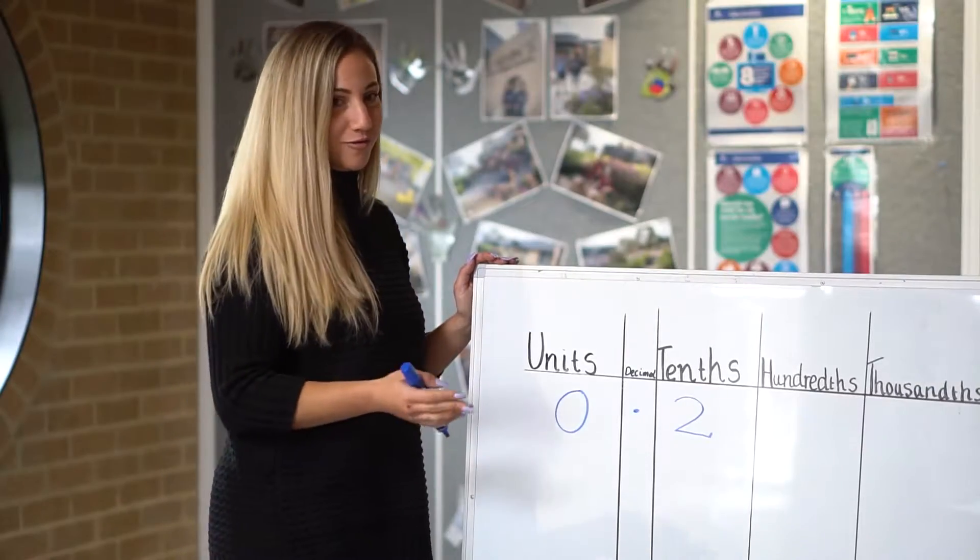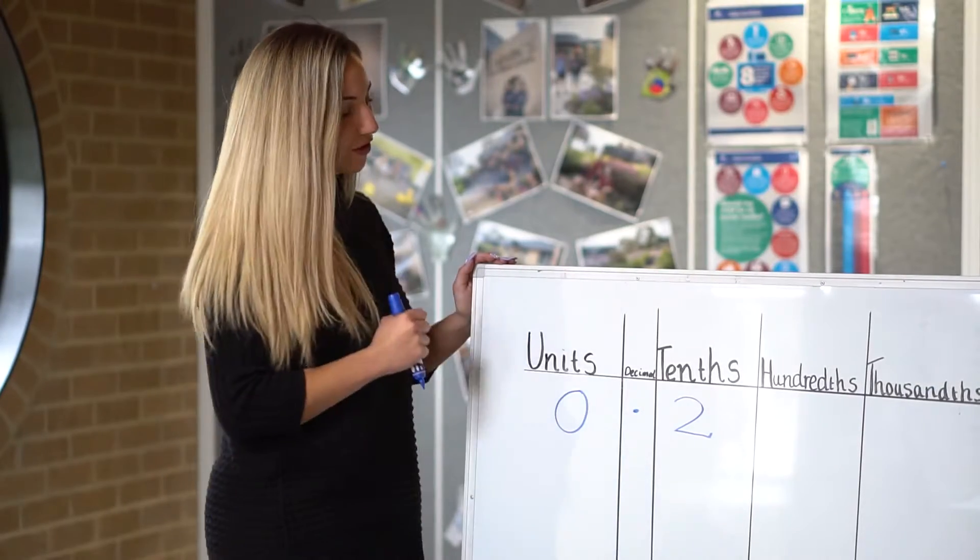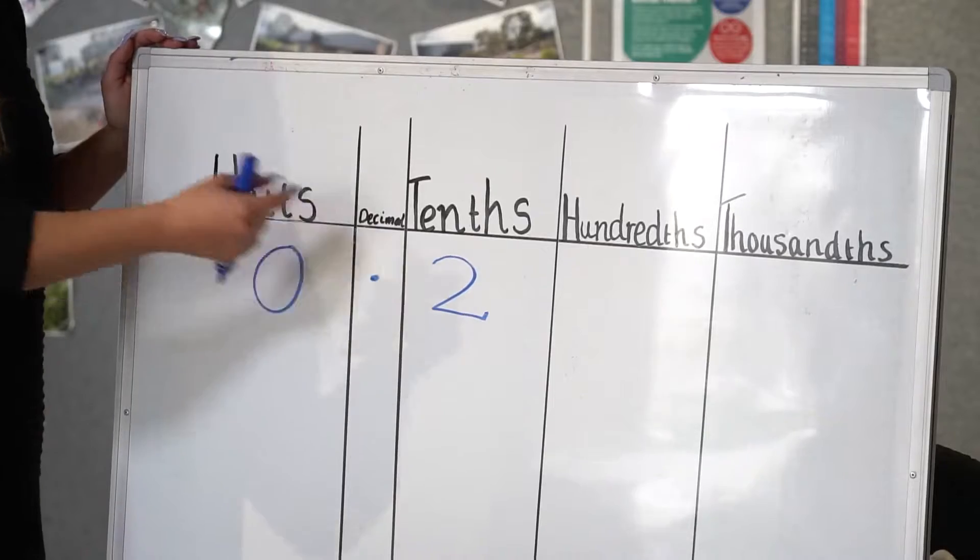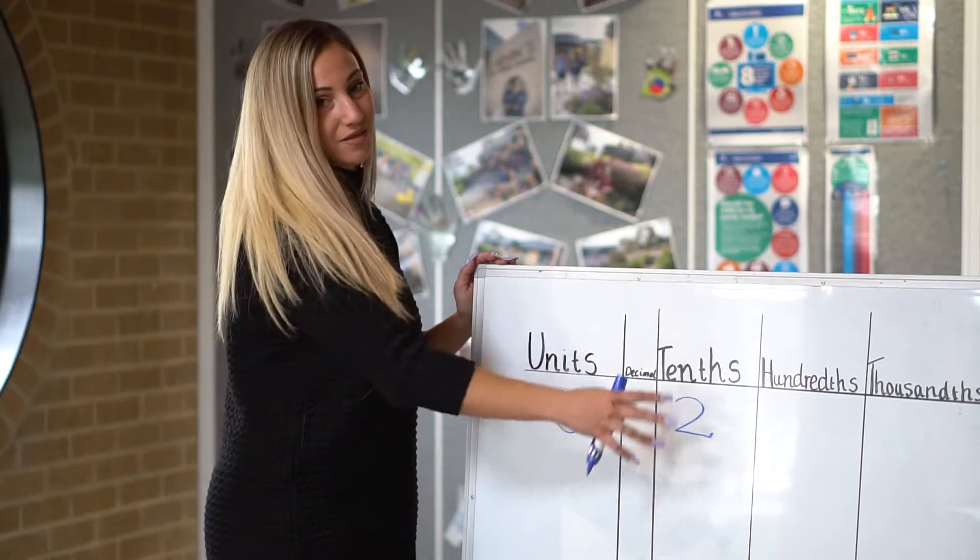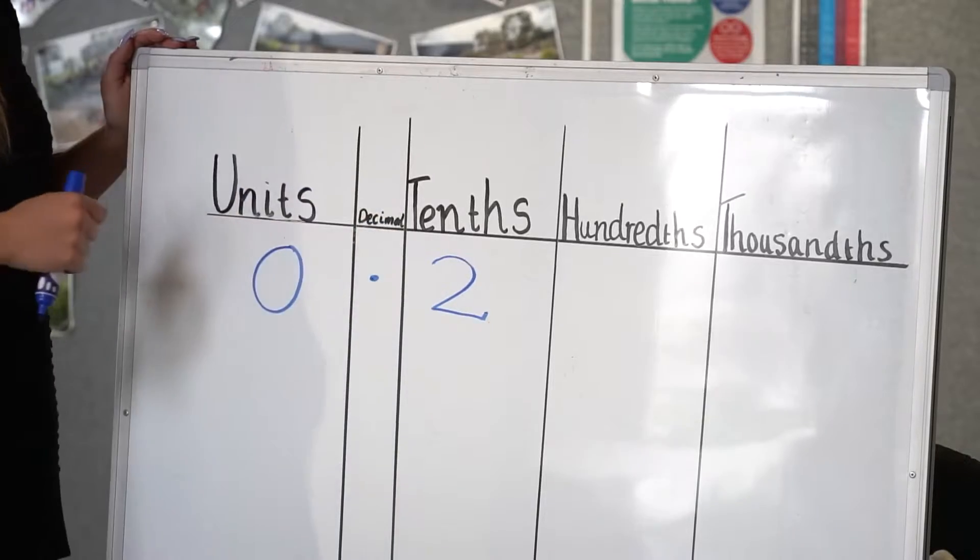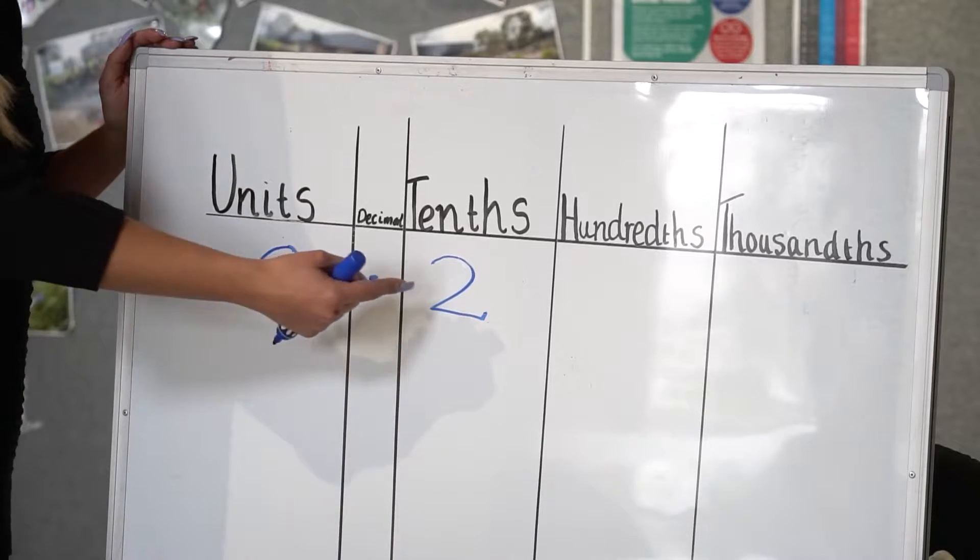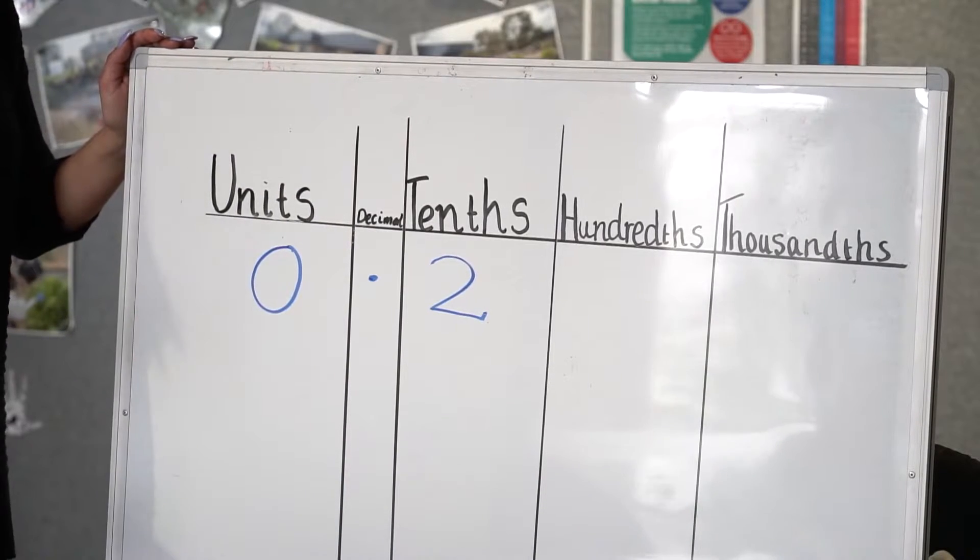A lot of children will read this as 0.2, but the correct vocabulary is two tenths. We read this as two tenths because of the place value system. Tenths means we have ten equal parts and we have two of those, meaning we have two tenths.